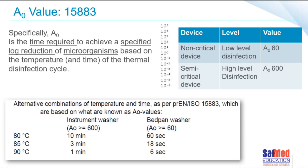ISO and SANS 15883 describe the concept known as the A0 value — the time required to achieve a specified log reduction of microorganisms based on the temperature and time of the thermal disinfection cycle. In steam sterilization we want a log reduction to 10⁻⁶; with disinfection it is not as high, but we still need to clearly disinfect our instruments. A manufacturer can, for example, set the water temperature at 90°C to achieve the correct level of disinfection. At 90°C, the standard states that the disinfection cycle in an instrument washer must run for a minimum of one minute.